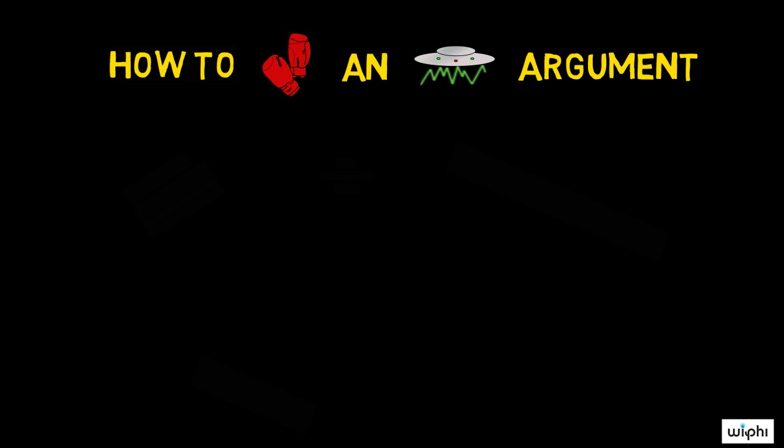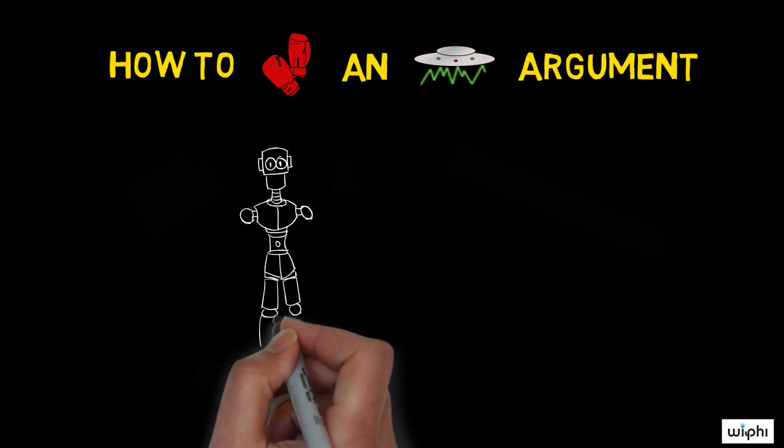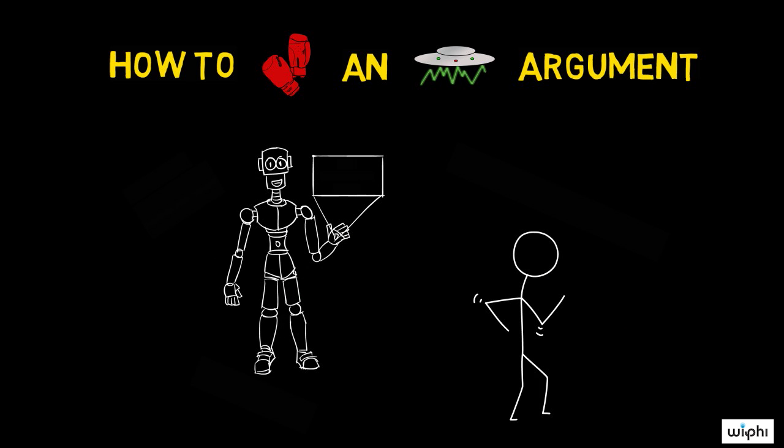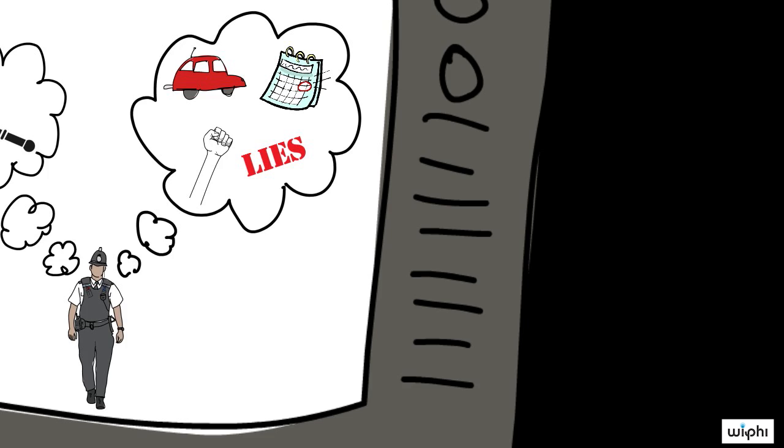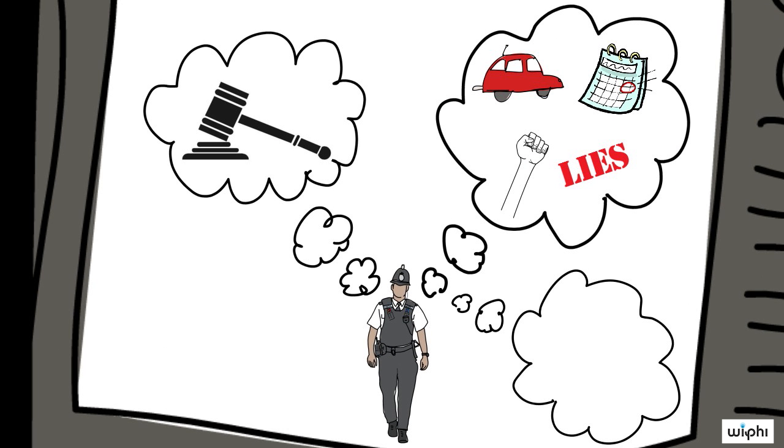One way to challenge an abductive argument is to try to come up with a better explanation of the data than what the argument provides. Another way to challenge an abductive argument is to look for more evidence to add to the premises.